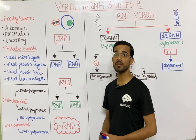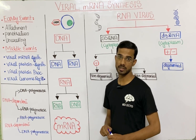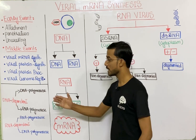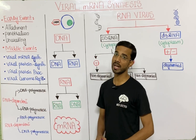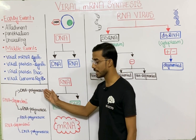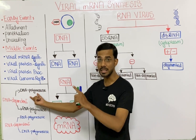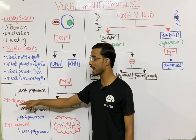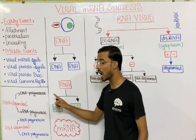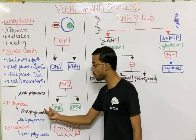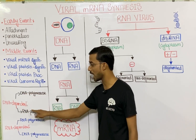First of all we will revise the polymerase. You will see two basic types: DNA dependent and RNA dependent. In the DNA dependent category you see the DNA dependent DNA polymerase, which forms DNA from DNA. Next is the DNA dependent RNA polymerase, in which you see the formation of RNA from DNA.